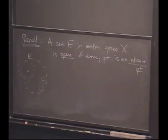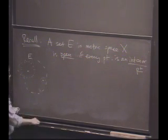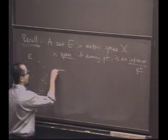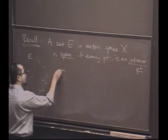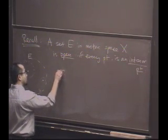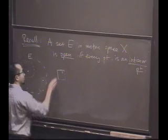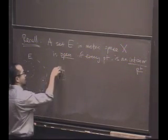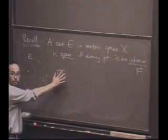This would not be true of a set like this picture — maybe you have a set where this point is also in E, but it does not have a neighborhood around it that lies completely within E. Every neighborhood actually has some points outside of E. So this set would not be open.